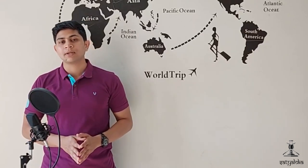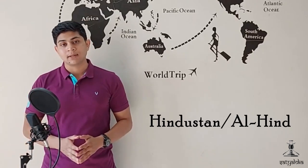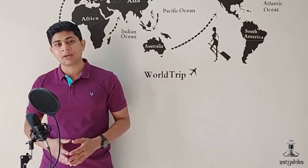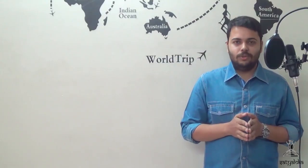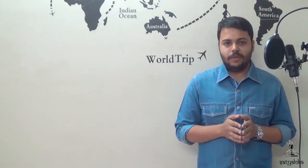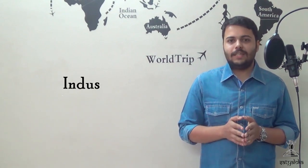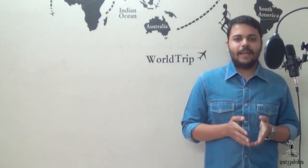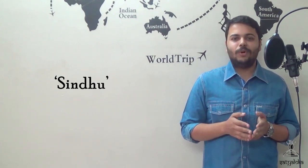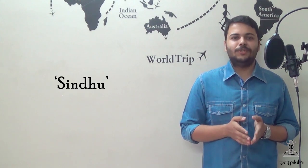Our country has two official names: India and Bharat. The Persians and Arabs used yet another name for the country, Hindustan or Al-Hind. Since Persian has played a big part in the development of our national language Hindi, the term Hindustan is also used in common parlance today. Both Hindustan and India are derived from the name of the river Indus, which marked the western boundary of India for travellers. Indus is again derived from the Sanskrit name Sindhu, and both terms have been in use since the 5th century BCE.